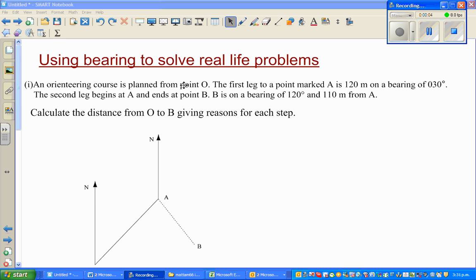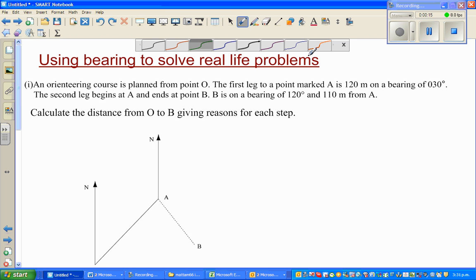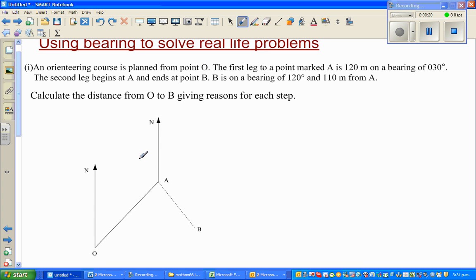The objective of this video is to use bearing to solve real-life problems. Let's read this question. An orienteering course starts from point O. This is point O, where the orienteering course starts. The first leg is to a point marked A, 120 meters on a bearing of 30 degrees.